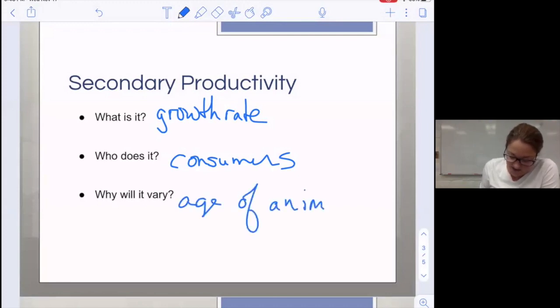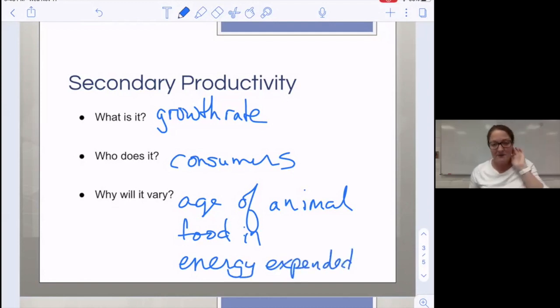Other things that affect weight gain and weight loss are the food in and the amount of energy expended. You can think of energy expended as how much respiration is being done.